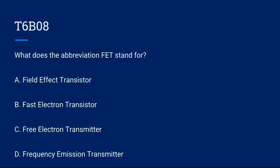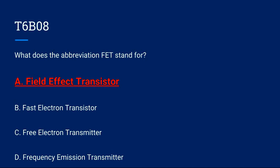T6B08: What does the abbreviation FET stand for? A, field effect transistor. B, fast electron transistor. C, free electron transmitter. Or D, frequency emission transmitter? The correct answer is A, field effect transistor.